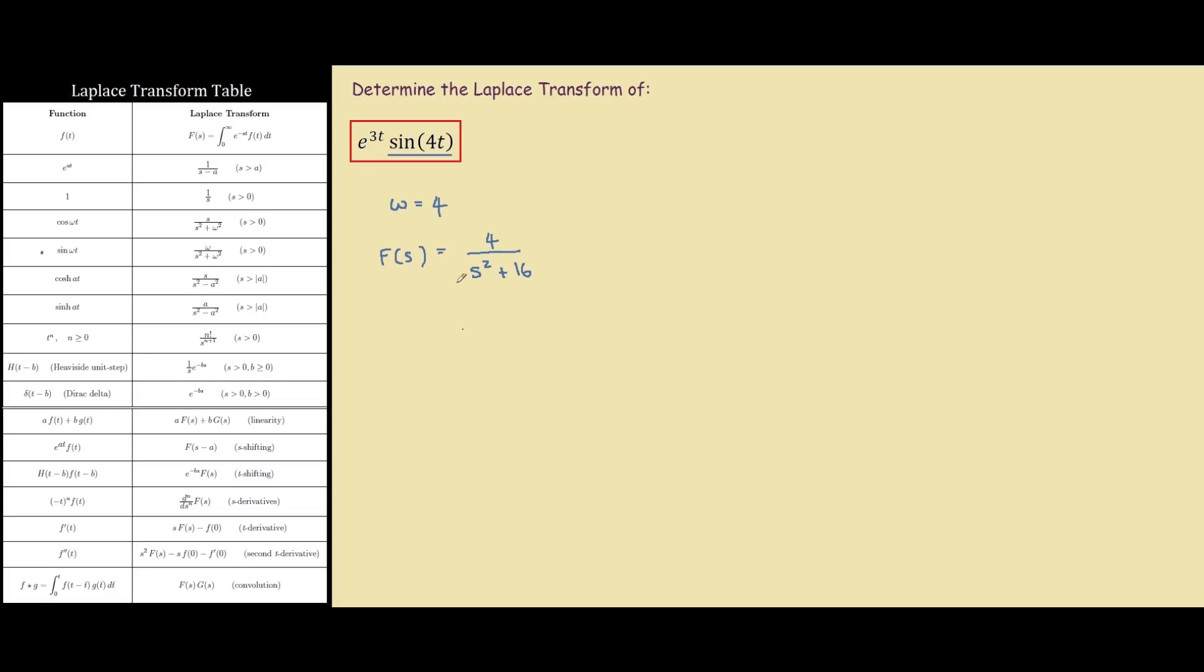Now that we have found the Laplace transform for sin, we can now look at the whole function. And if we go down to our tables, the function looks like this in our s-shifting, where we have e to the power of at times some function.